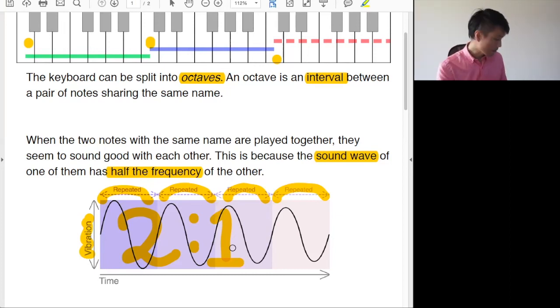Now compare this to this. Now the ratio is not two against one. This is why when you play these two notes, C and B by the way, they sound like they are in a complicated situation.